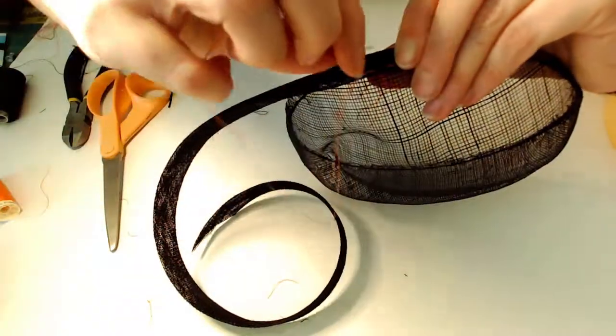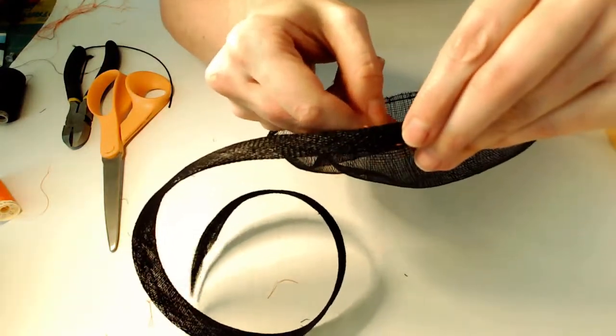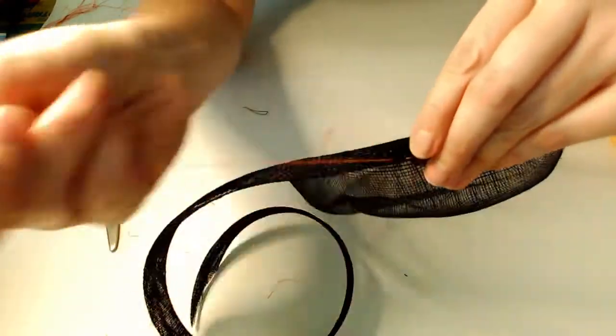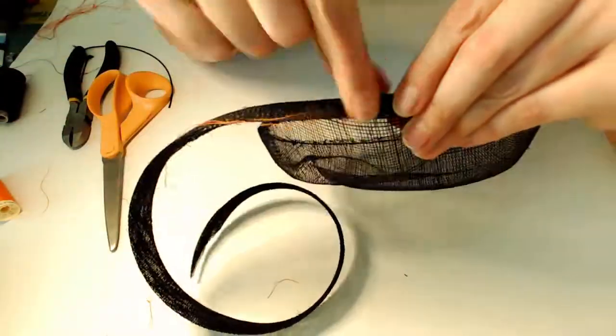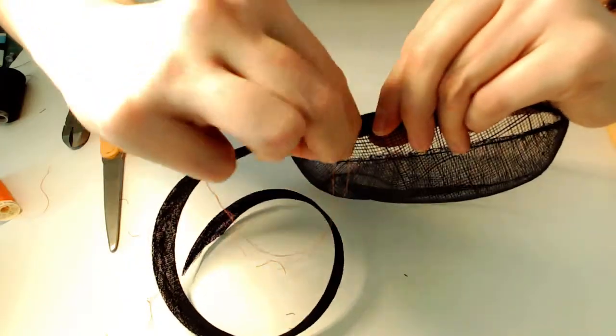And I just have to keep working along the edge. And if this was black thread, you wouldn't really see these stitches, they would disappear. Or you could do smaller stitches so that they disappear. But you're just going to keep going like this along the edge, taking a little stitch.